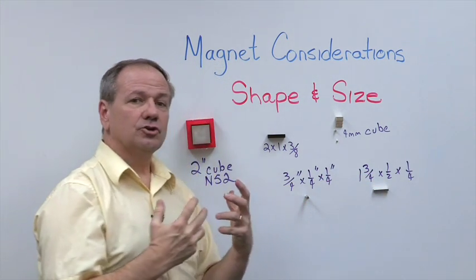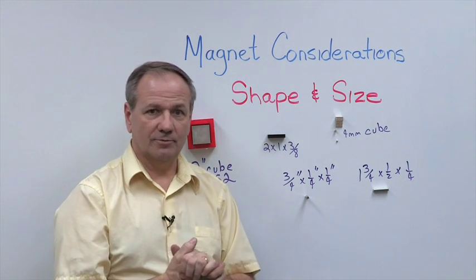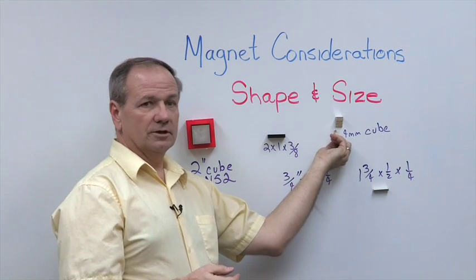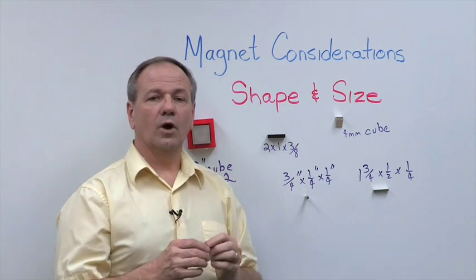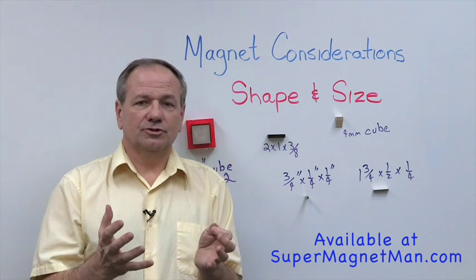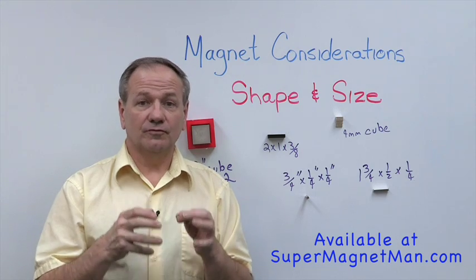Now we're going to talk a minute about cubes. Cubes come up all the time. A cubic shape is really very good for us because a cube gives us a way of getting the maximum magnetic field distribution out of a unit volume.